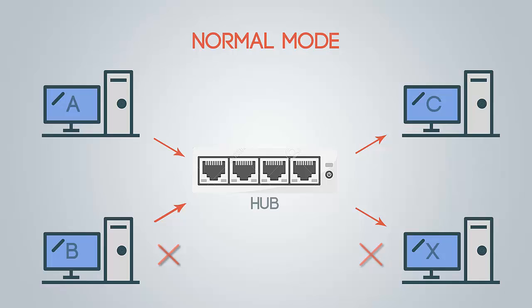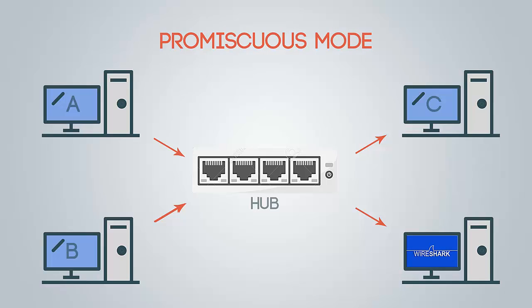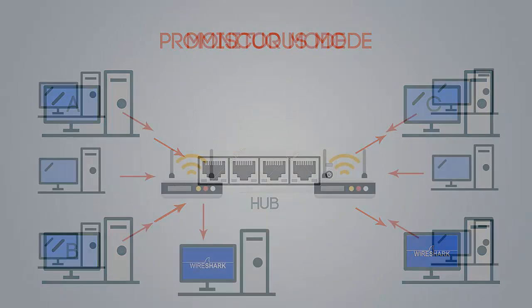The second mode is promiscuous mode. PC A sends traffic to PC C, and the packet is dropped by PC B. However, PC X has Wireshark set up, so PC X will capture the whole traffic passing through the hub.